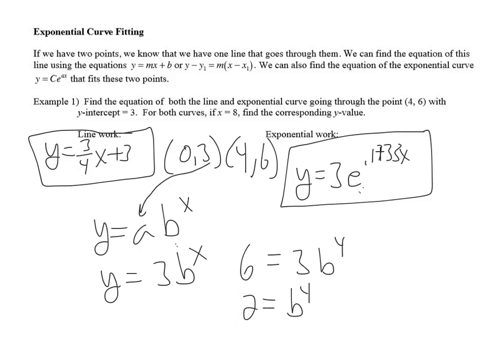Then if we substitute in 4 and 6, 6 equals 3 times b to the 4th, divide both sides by 3. That's going to give you 2 equals b to the 4th. So now we're going to ask ourselves, how do we solve that for b? Well, I'm going to take the 4th root of both sides of this equation.